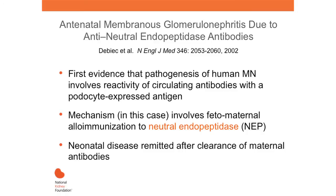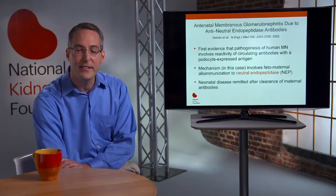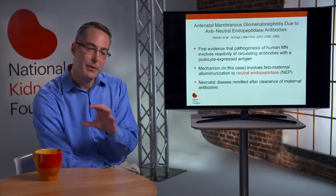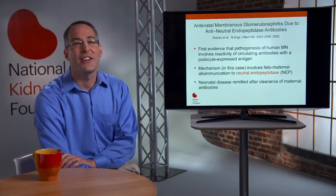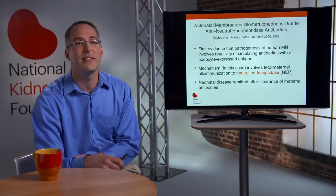The first evidence for a human antigen was provided by Pierre Ronco's group in France. They found a very interesting case of a mother who was genetically deficient in a protein called neutral endopeptidase, or NEP. She was unaffected by this genetic deletion, but during her first pregnancy — which was miscarried — the fetus expressed NEP from the father's side, and she was immunized against this protein during the miscarriage. During a subsequent pregnancy, this circulating anti-NEP antibody crossed the placenta into the fetal kidney, targeted NEP on the fetal podocyte, and caused membranous nephropathy. The infant was born with nephrotic syndrome, which went away once the baby cleared the maternal antibodies.